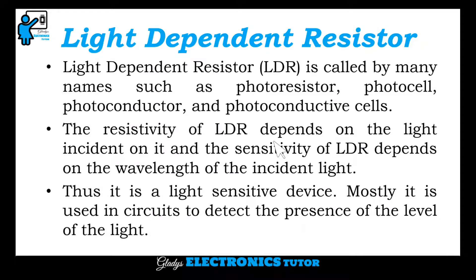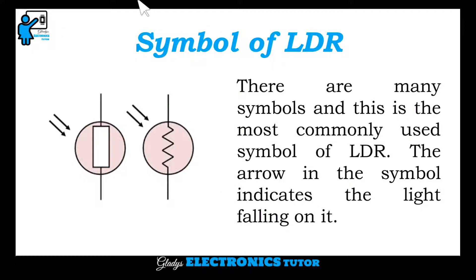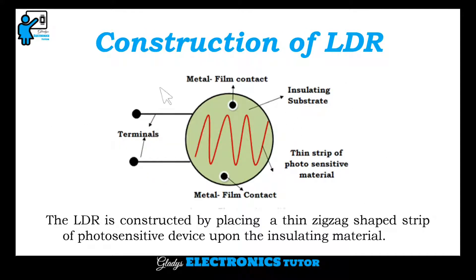LDR is a light sensitive device; mostly it is used in circuits to detect the presence or level of light. This is the symbol of LDR. There are many symbols, and this is the most commonly used symbol of LDR. The arrow in the symbol indicates the light falling on it.